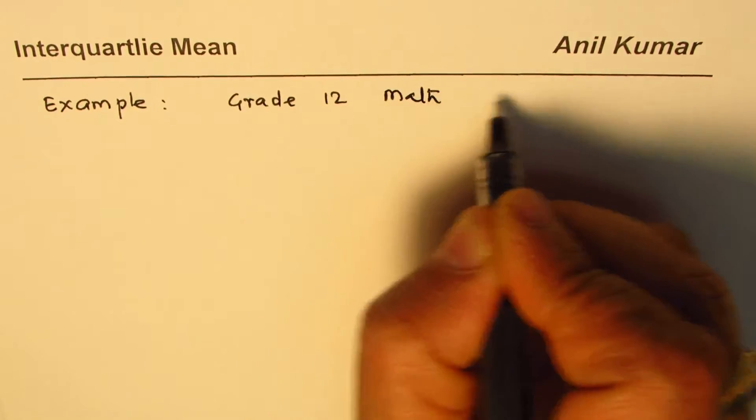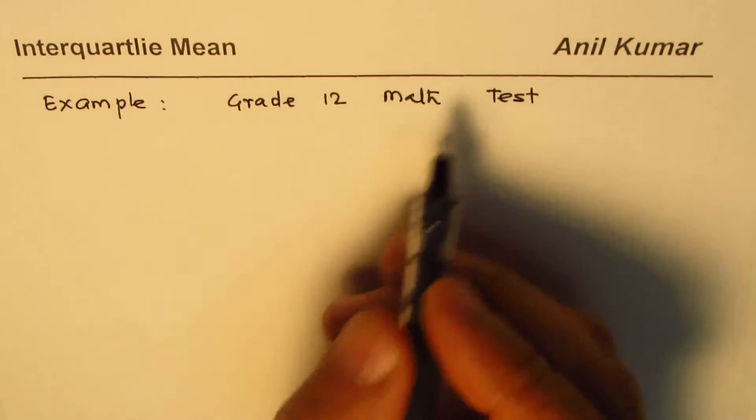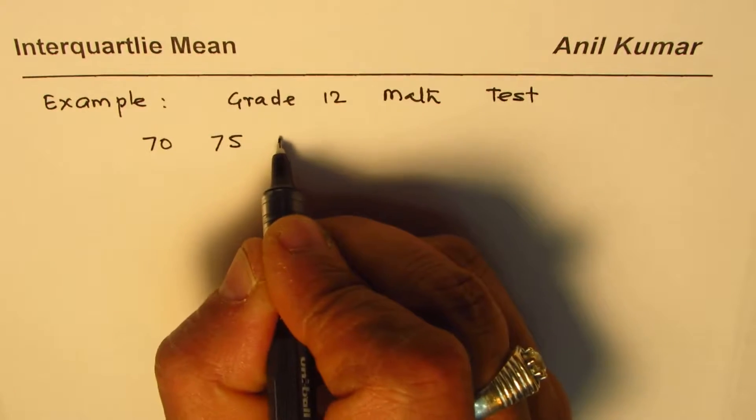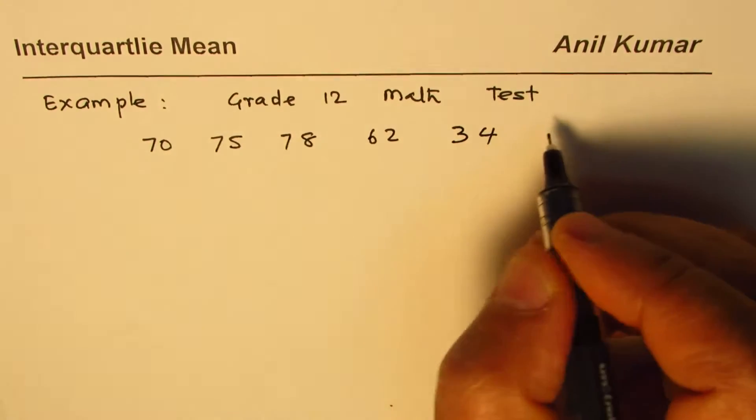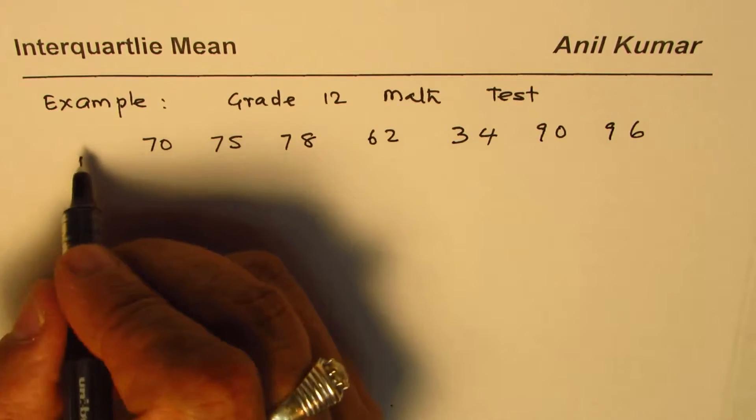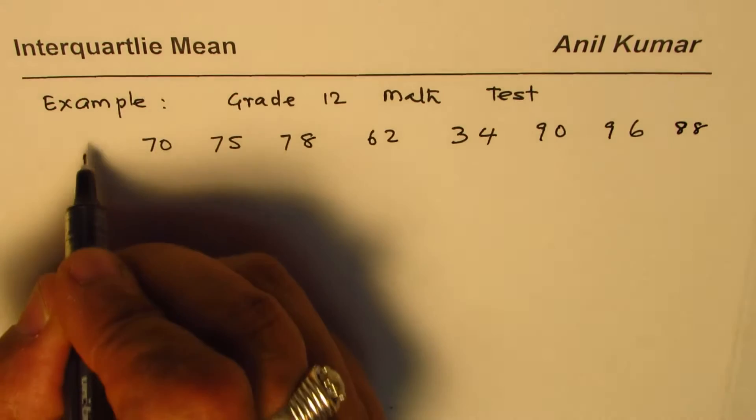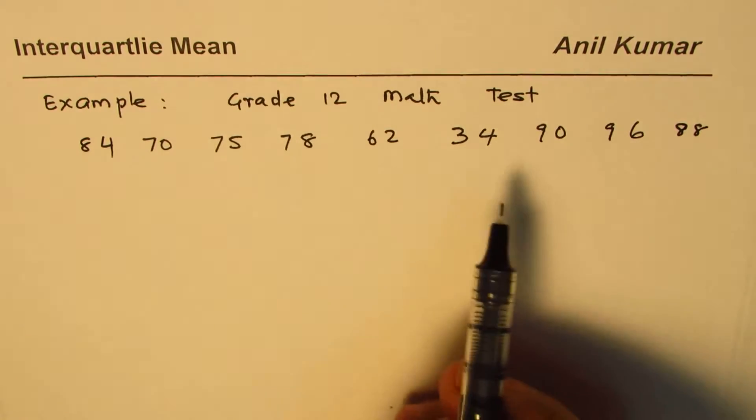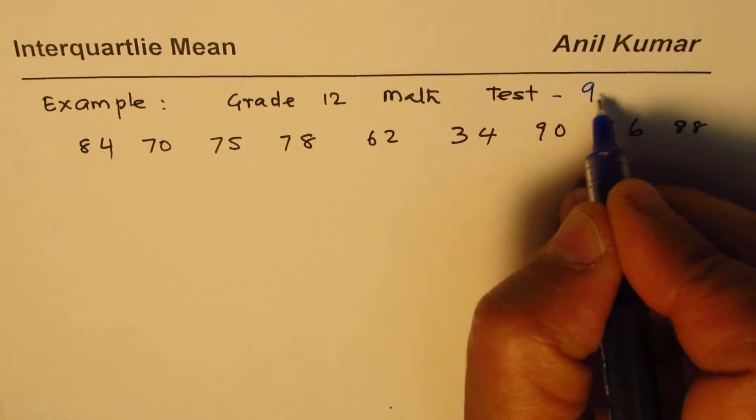Grade 12 math test. So let us say the marks for grade 12 students are 70, 75, 78, 62, 34, 90, 96. Let me add two more in this list: 88 and 84. These are the marks obtained by nine students.